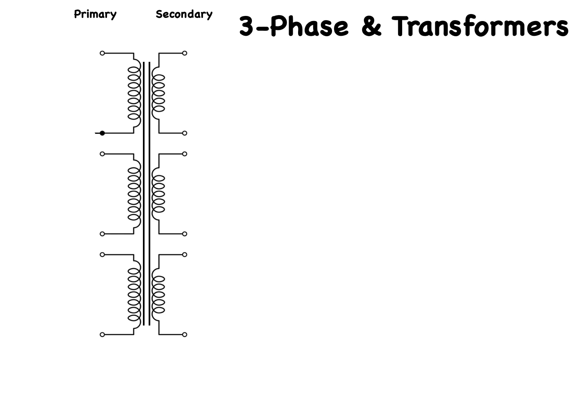I am now going to connect the bottom side of each winding on the primary side of the transformer and ground that connection, designating it as neutral or N. The top side of the winding I am going to connect to a balanced three-phase power system designated R (red), W (white), and B (blue). This is known as a Y connection, designated as such on drawings and nameplate data as shown here. The fact that the neutral is grounded is indicated with a grounding symbol coming from the center point of the Y.